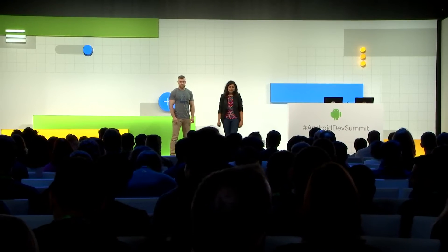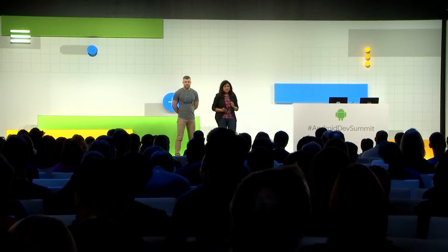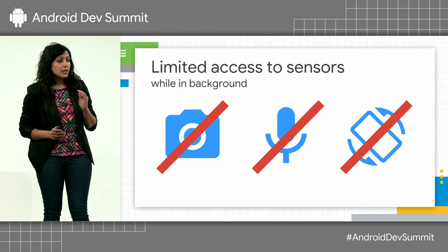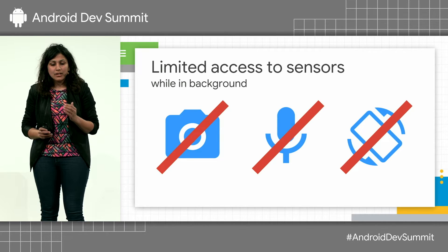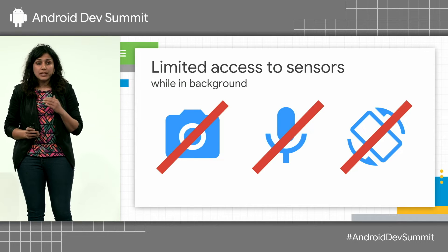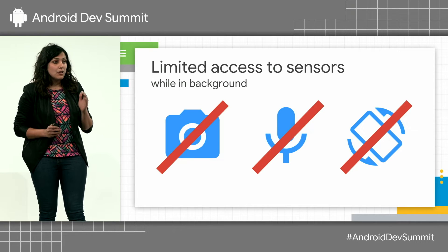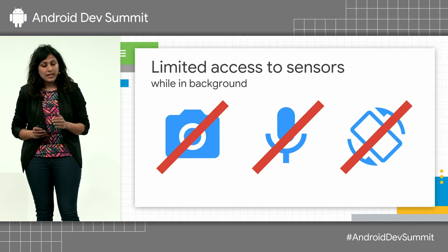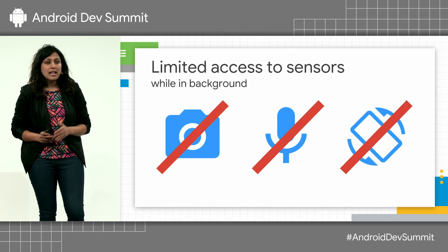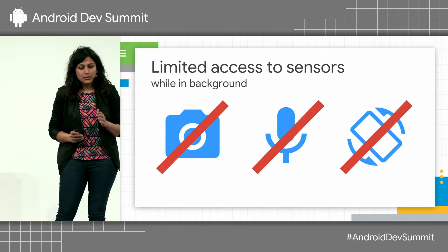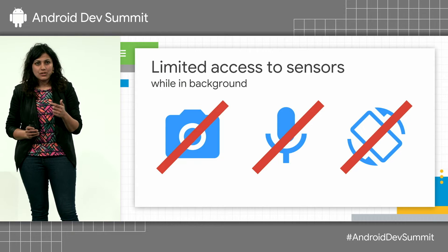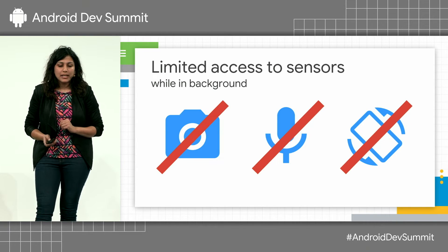A reminder regarding limited access: apps running in the background on Android 9.0 will face the following restrictions. You will no longer have access to the mic or camera in the background. Sensors such as accelerometer and gyroscope will return empty data. If your app needs access to sensor events on devices running Android 9.0, you will need to use a foreground service. The system will also add a visual indicator to your notifications when your services are accessing the camera or the mic.